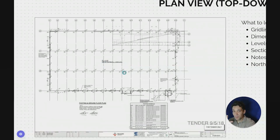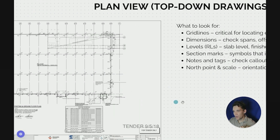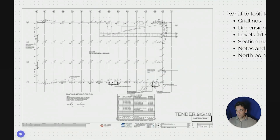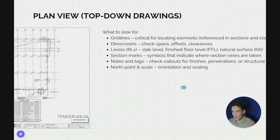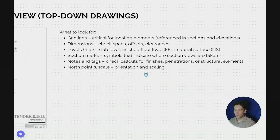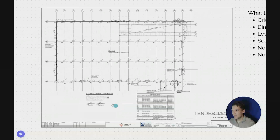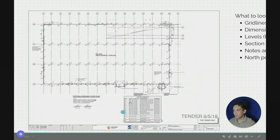This is a plan view taken at finished floor level of the building, which is at RL 31.25. You can have section marks showing a cut of the building with a drawing reference so we can go look at that section for a more detailed view. There'll also be notes and tags which call out finishes, penetrations, or structural elements, and a north point that gives us an orientation of where we're looking.